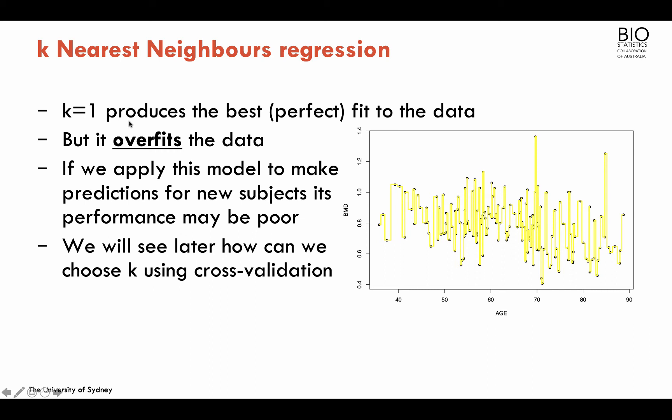K=1 produces a perfect fit but clearly overfits the data. How do we choose the number of neighbors? We're going to talk later about cross-validation, which is a way of choosing K by fitting the model on one part of the data set and validating on a different part — essentially analyzing its performance on a separate data set.